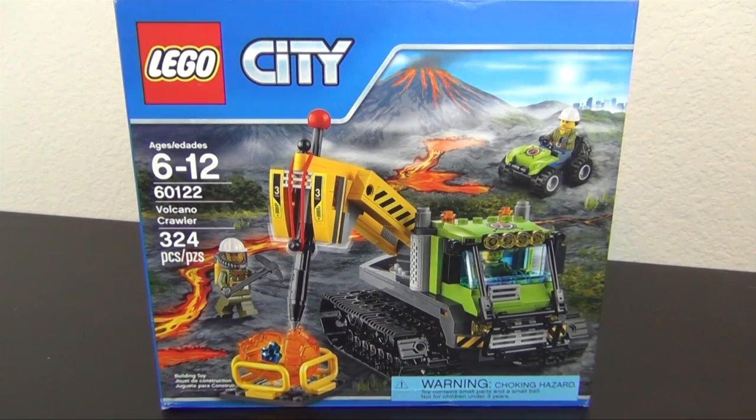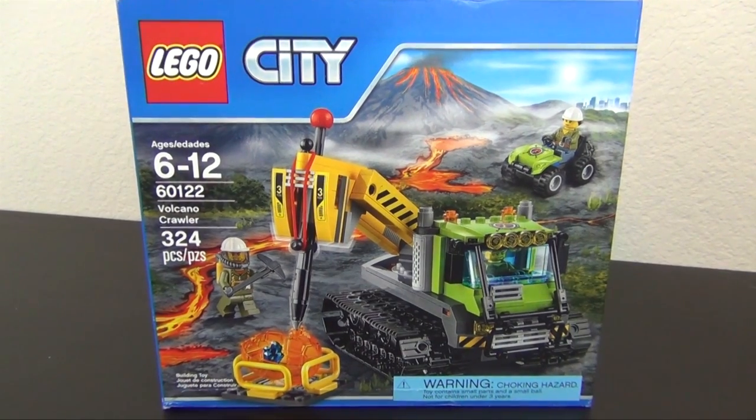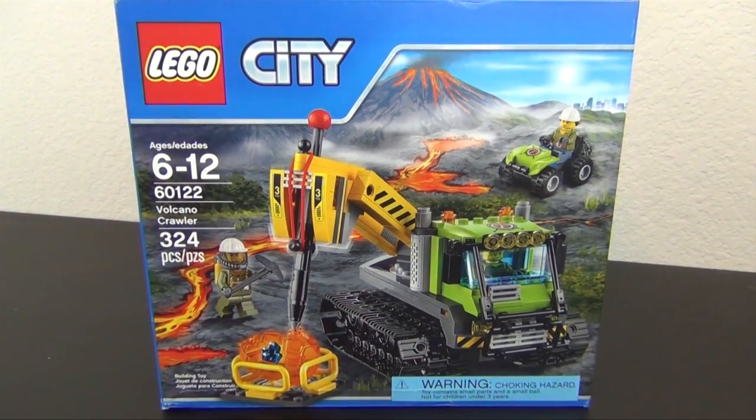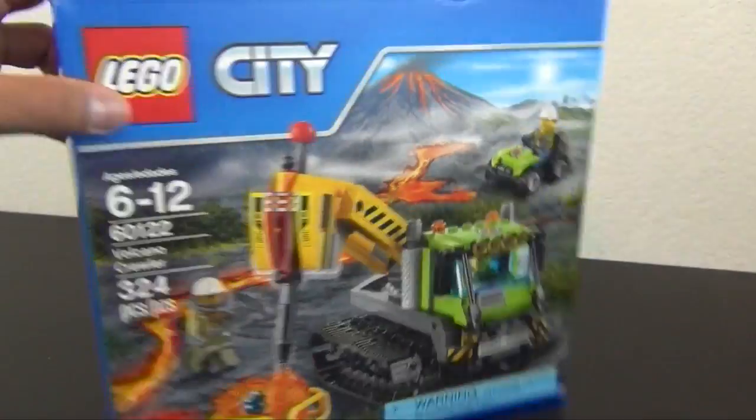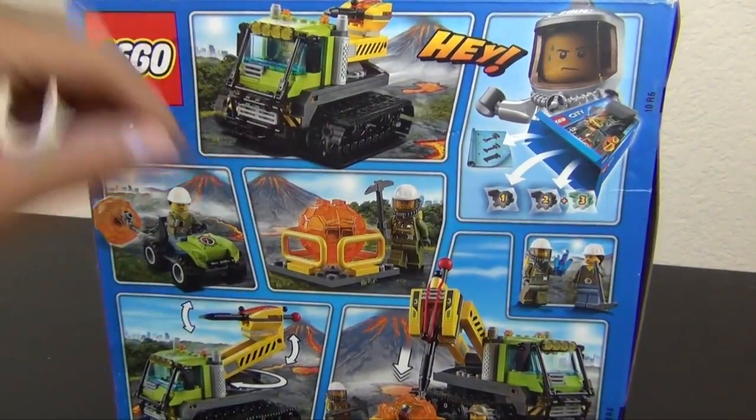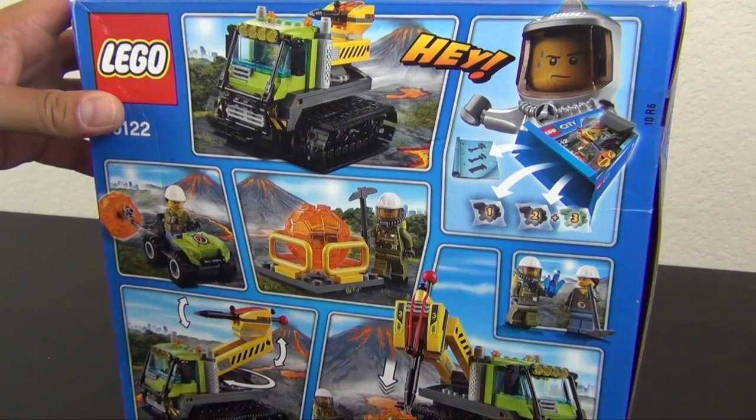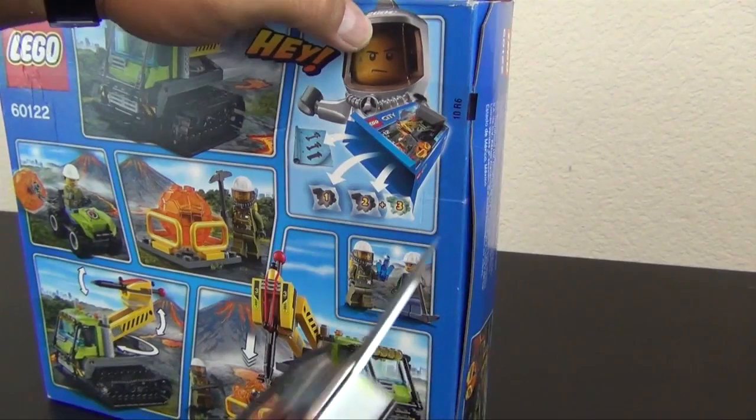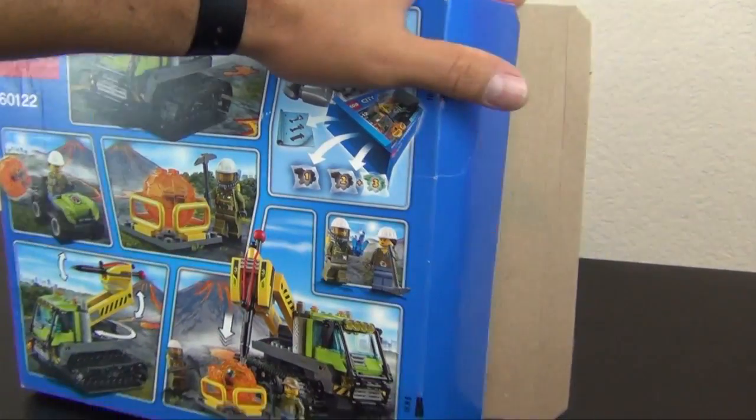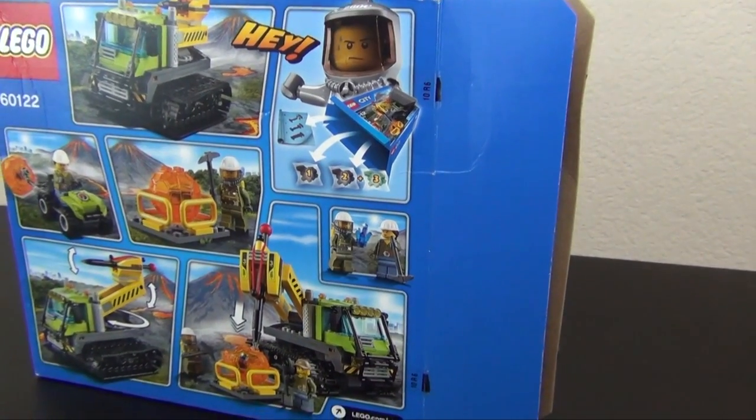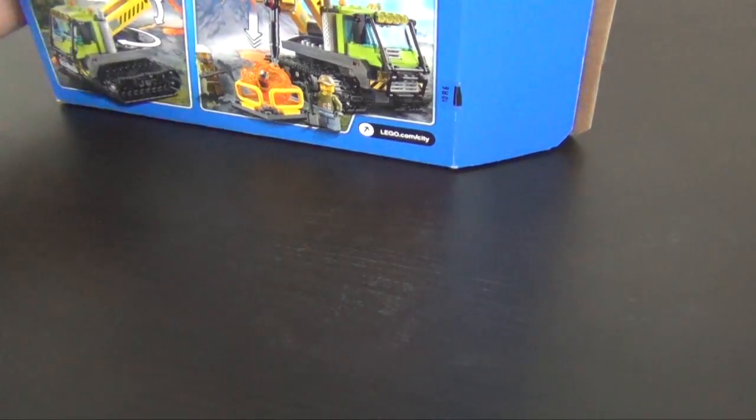Hey everyone, welcome back to the Hidden Brick where today we're going to build the LEGO City Volcano Crawler set number 60122. It comes with 324 pieces, looks like three minifigures, and a tracked vehicle that crawls through volcanoes and does some volcano exploration. We'll break the seal and see what we have in here.